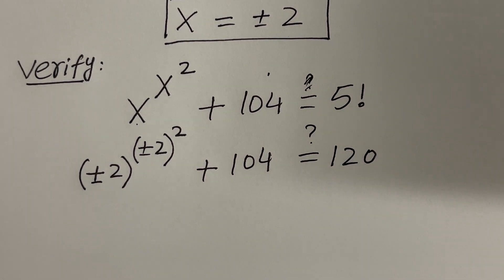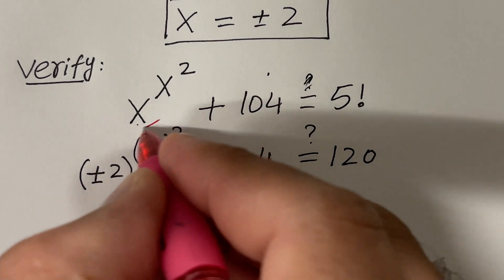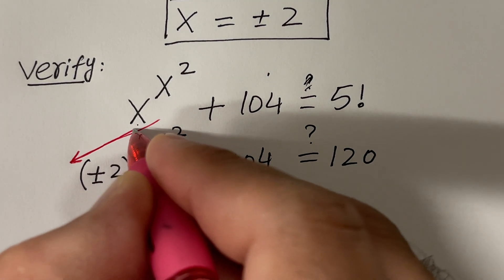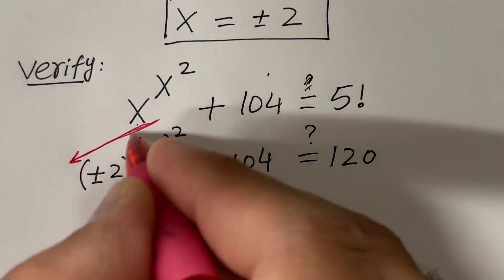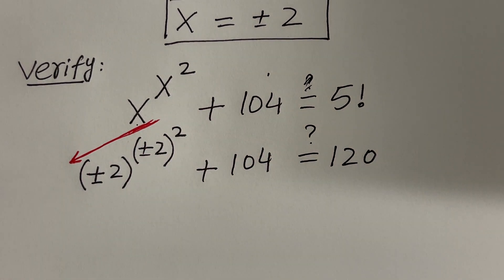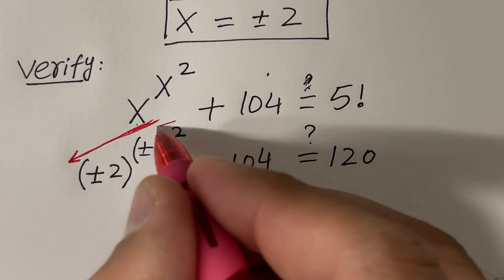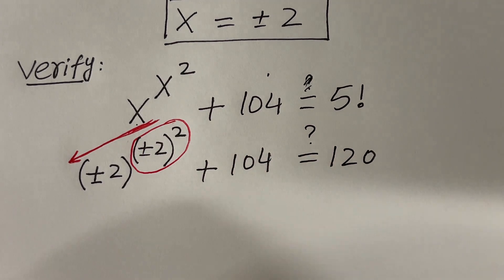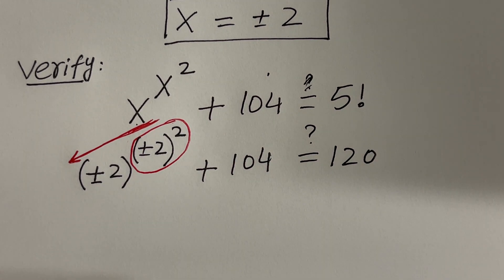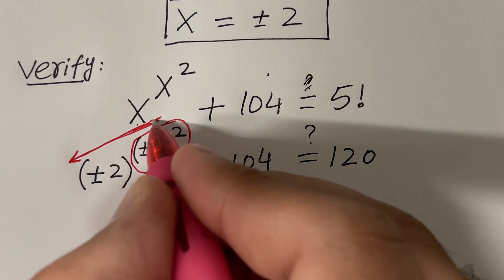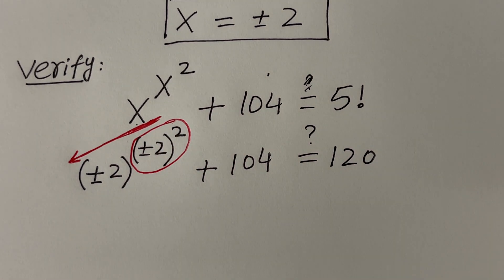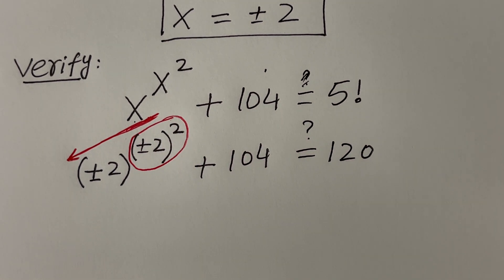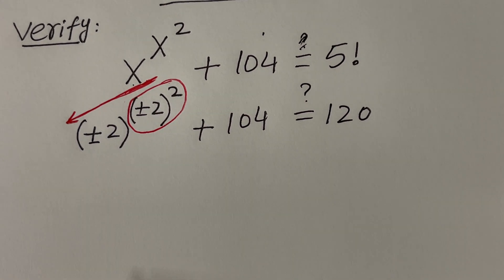We know that 5! = 120 — we did it earlier. Remember, power tower means you have parenthesis, so you have to move downwards: simplify the top exponents first and then move downwards. This is how the tower operation is defined.